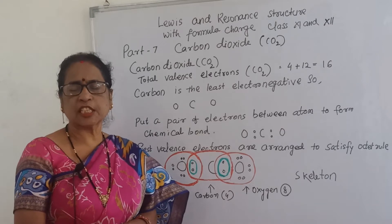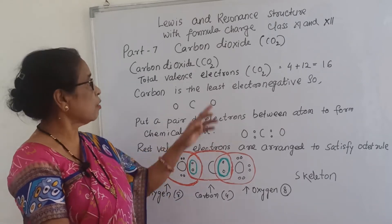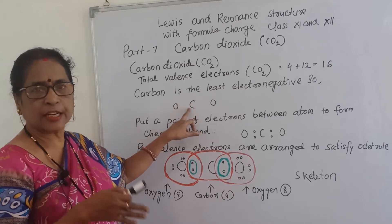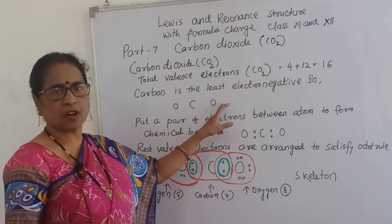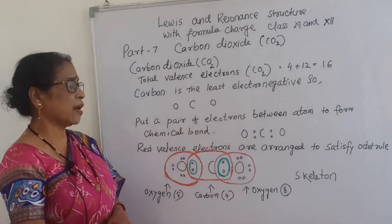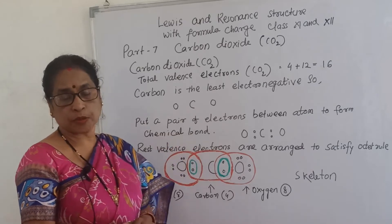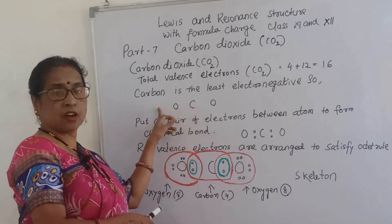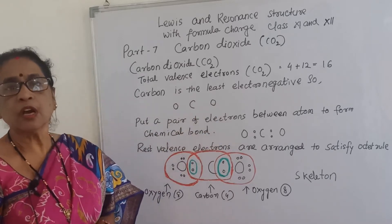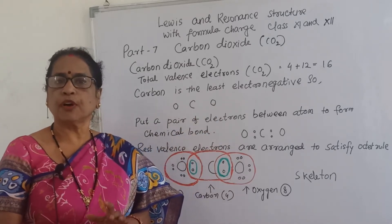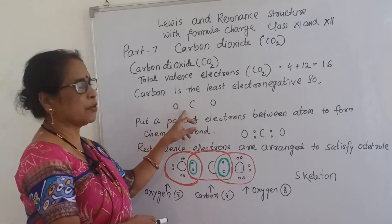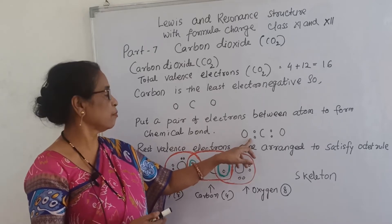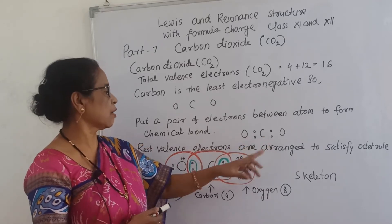After that we will see which one is the least electronegative element in that molecule. Carbon is the least electronegative element compared to oxygen, so it should be in the center. The least electronegative atom should be in center. So in center carbon, this side one oxygen, this side one oxygen. Now put a pair of electrons between the atoms to show one chemical bond - a covalent bond formed between carbon and oxygen by sharing of electrons.